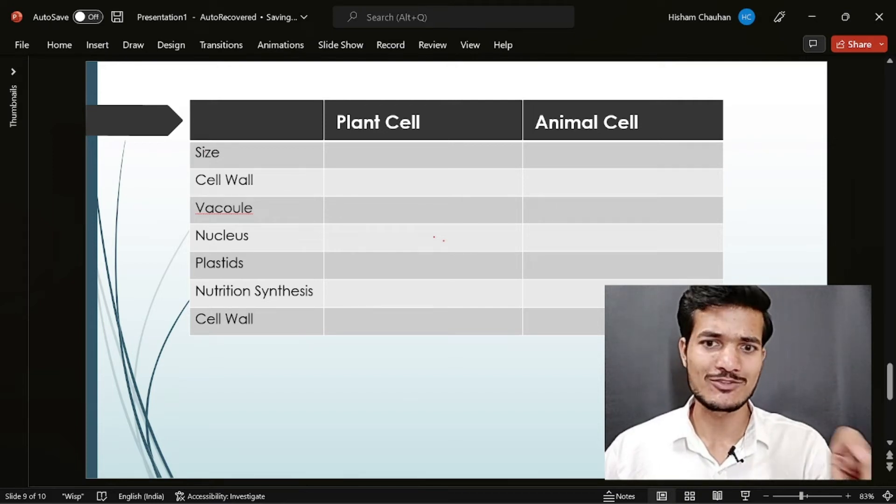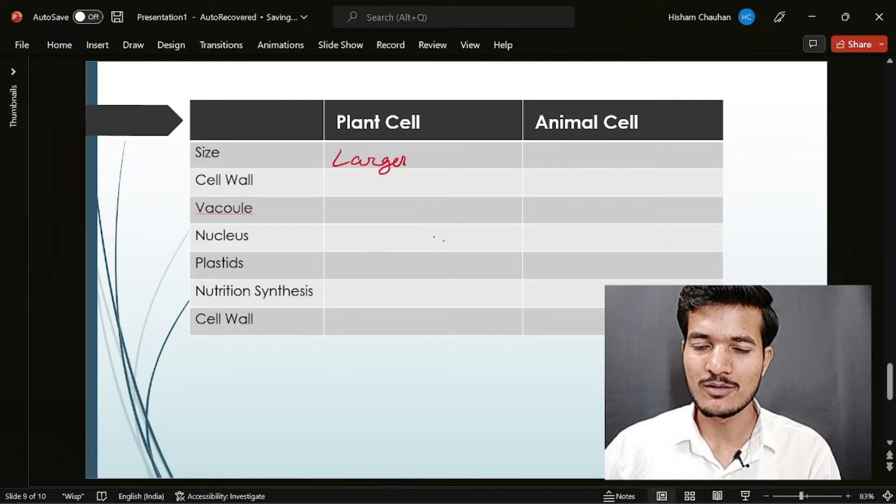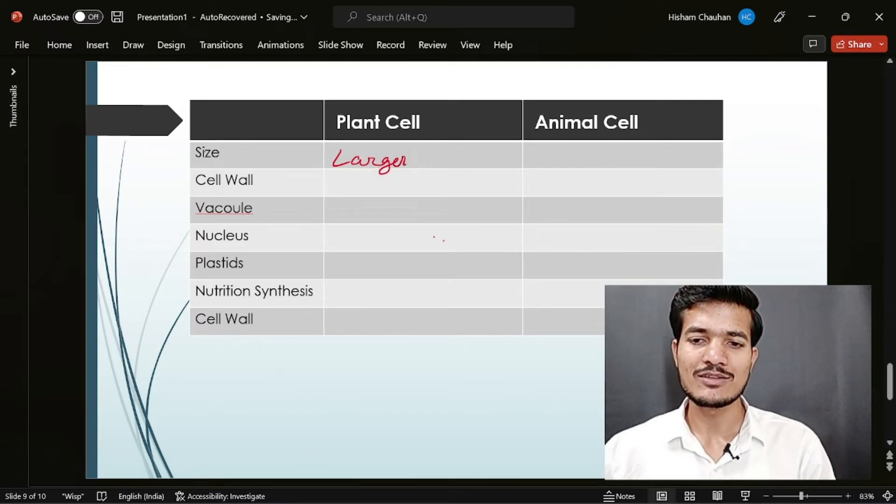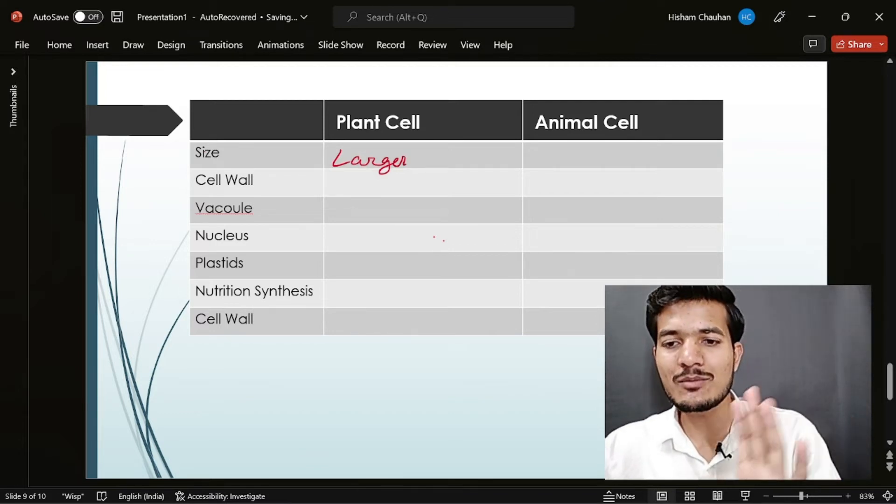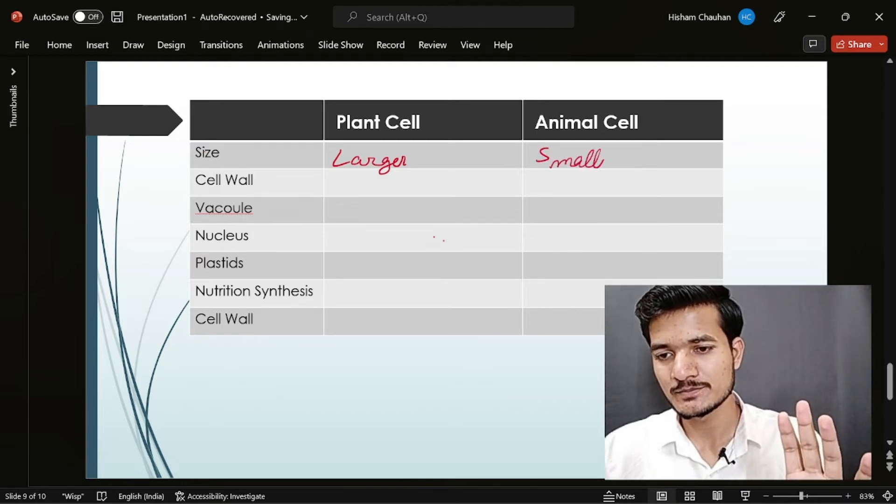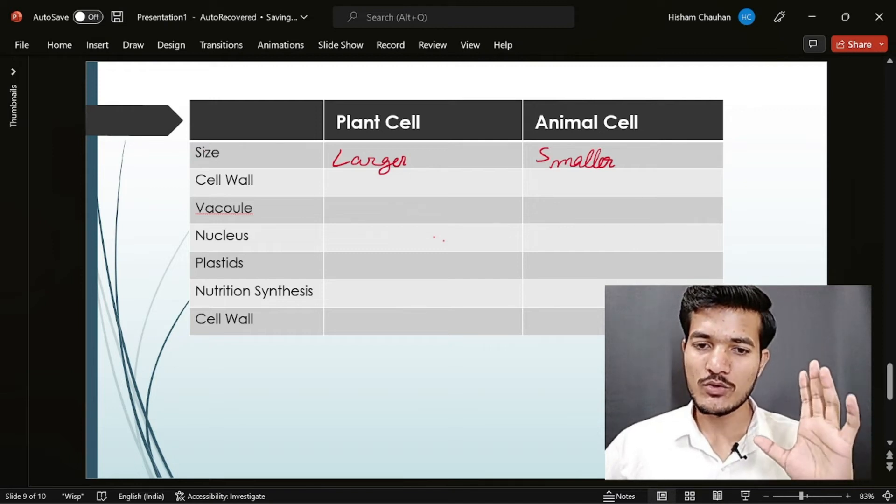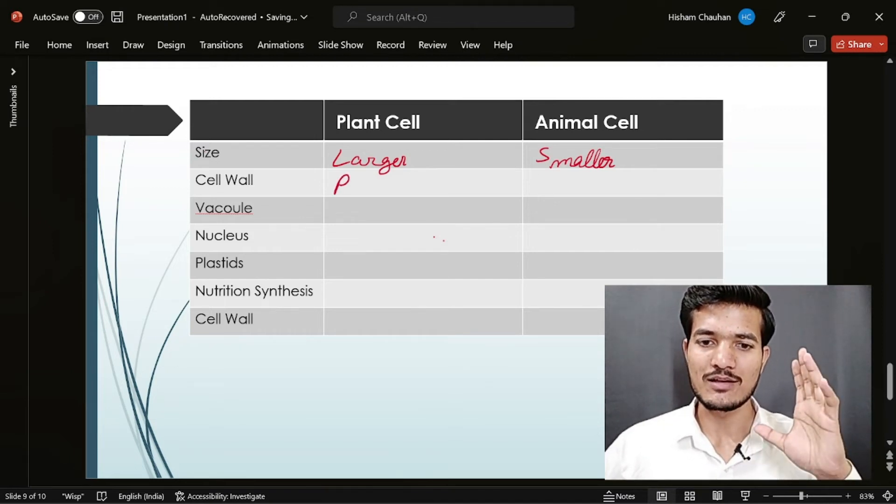Let's make this chart. What about the size? The size was a bit larger in the plant cells and generally in the animal cells the size is smaller. Okay, we could observe the presence of cell wall in the plant cells, which was absent in the animal cells.